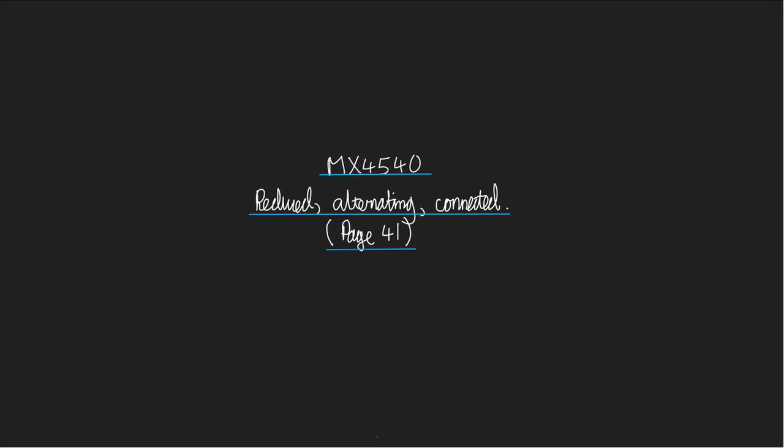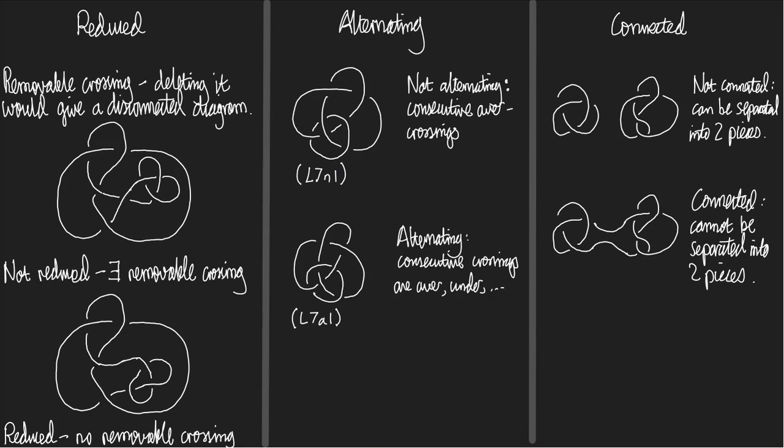Welcome to a mini lecture about reduced, alternating, and connected diagrams. We're going to see some important theorems that tell you that you can learn a lot about a knot or link by looking at its diagram. But those theorems only apply if the diagram is reduced, alternating, and connected. So this mini lecture is about telling you what those words mean — these are three properties of diagrams.